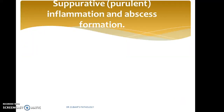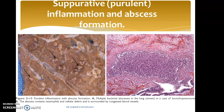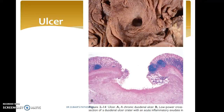Suppurative or purulent inflammation can lead to abscess formation. An abscess is a localized collection of neutrophils with a necrotic background — in common language, pus. Pus is an aggregate of neutrophils with a necrotic background and cellular debris. Finally, an ulcer is a break in the continuity of the skin or mucous membrane.